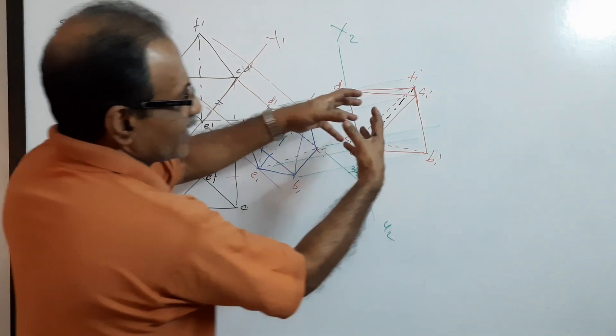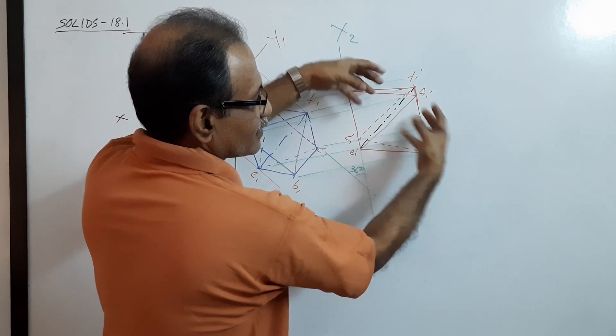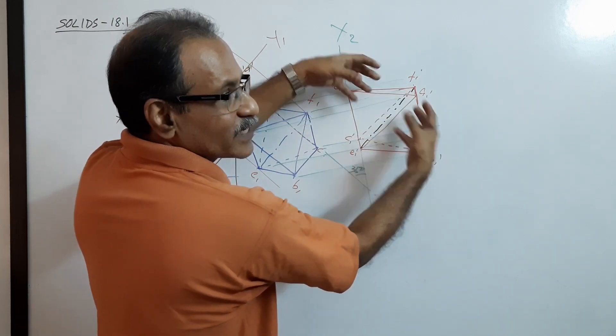Now the octahedron is lying. Look at this - square faces in contact. You will get a feel of the object.